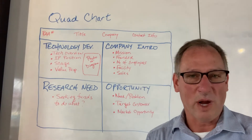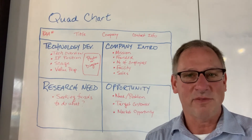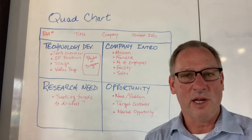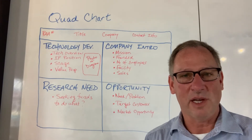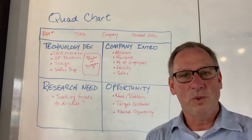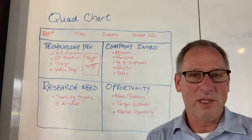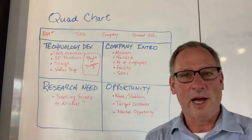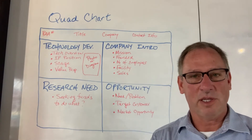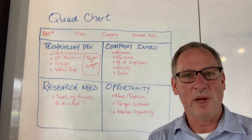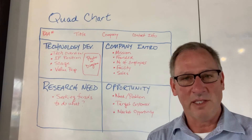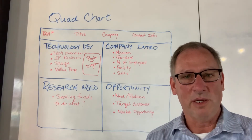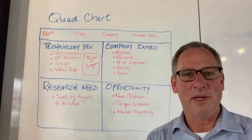If you can imagine the program officers at these agencies, you see lots of ideas come across their desks, and quad charts help them do a rapid evaluation of these ideas. There's no industry standard, but there are many common components. Today I'm going to talk about a format provided by the federal SBIR program, and a link to this template appears on the CTC website.